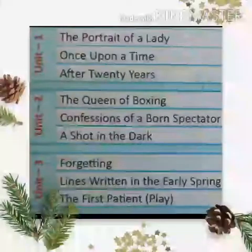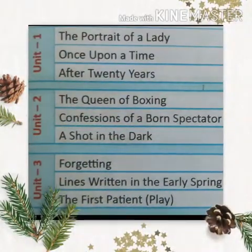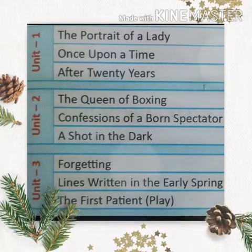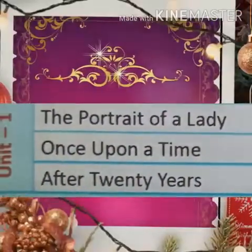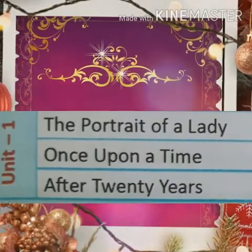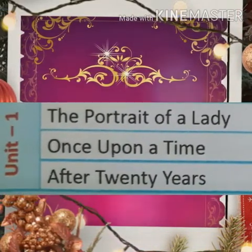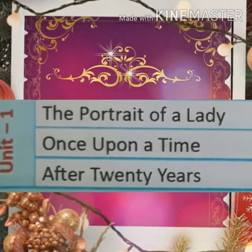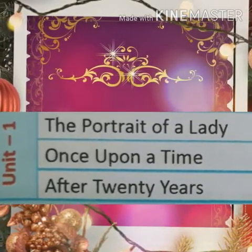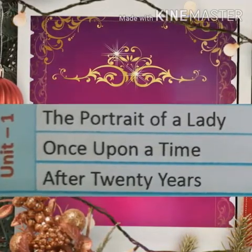There are three units for the quarterly exam. Each unit consists of prose, poem and supplementary reader. In the first unit we have a prose, 'The Portrait of a Lady', and we have a wonderful poem 'Once Upon a Time', and 'After 20 Years' is a supplementary reader.